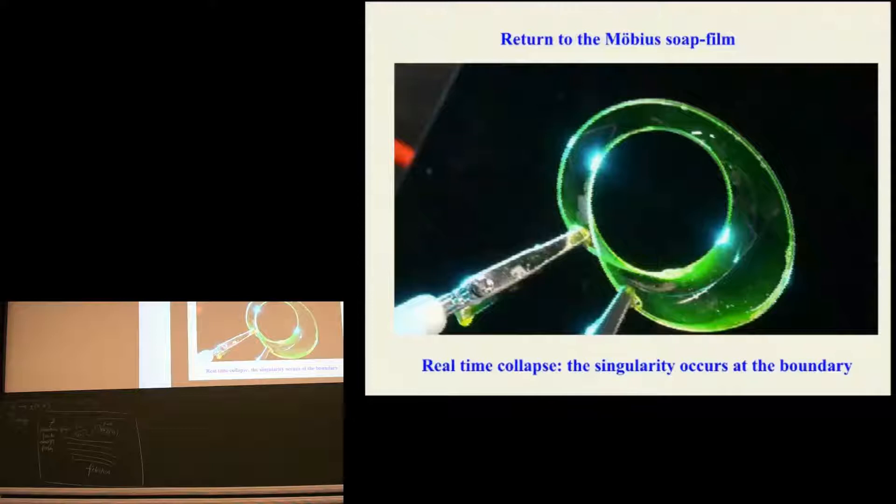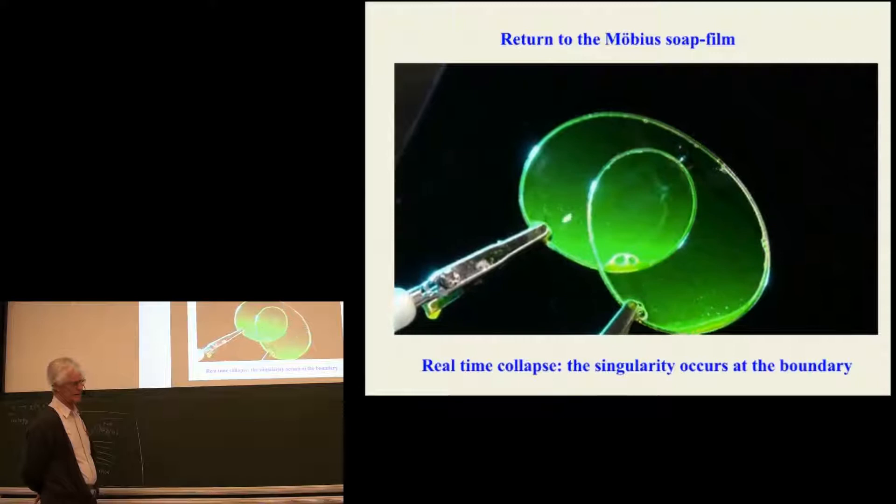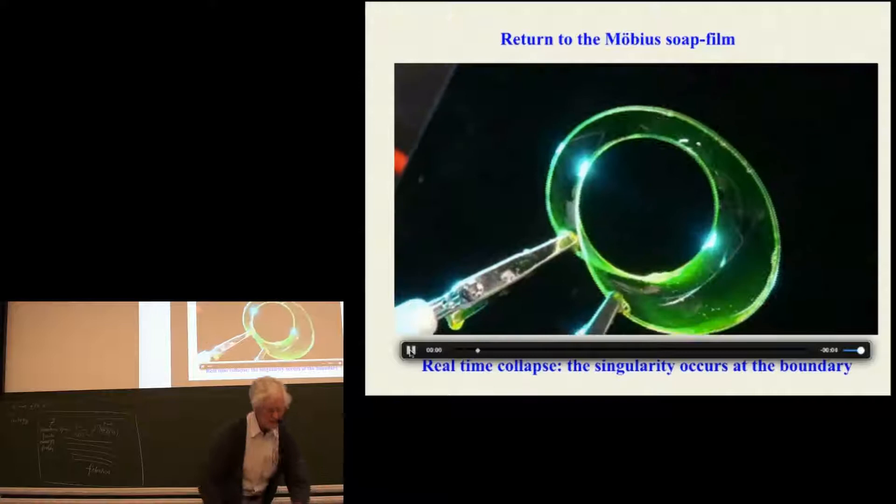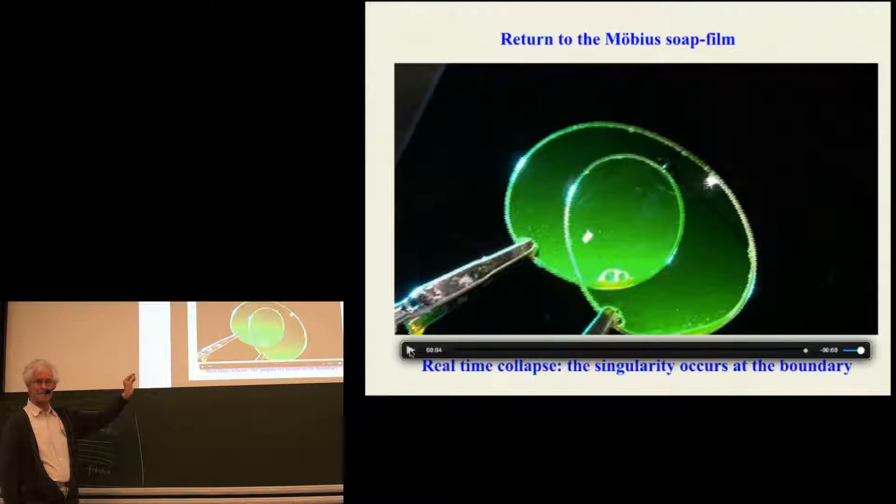So we decided to repeat the experiment. So we return to this Möbius soap film and here is Möbius soap film. We might look first at the real-time collapse of this film. You see, it's rather rapid. It's hard for the eye to see what is going on there. That's in just real-time. So we start, we've moved the film a little. It looks though, you can at least see there's the hole through the Möbius strip. It disappears, it collapses, and it collapses on the boundary, not in the interior of the film, but on the boundaries, a boundary singularity.